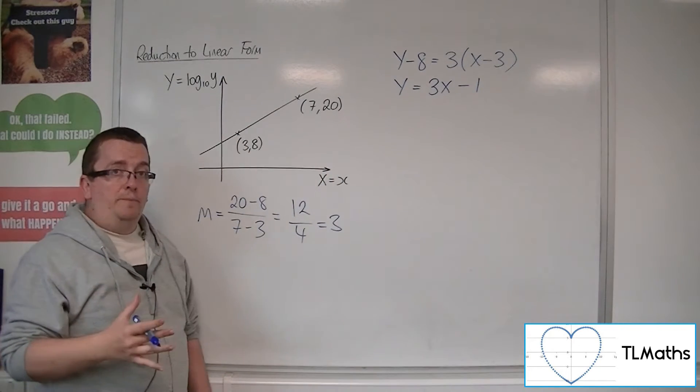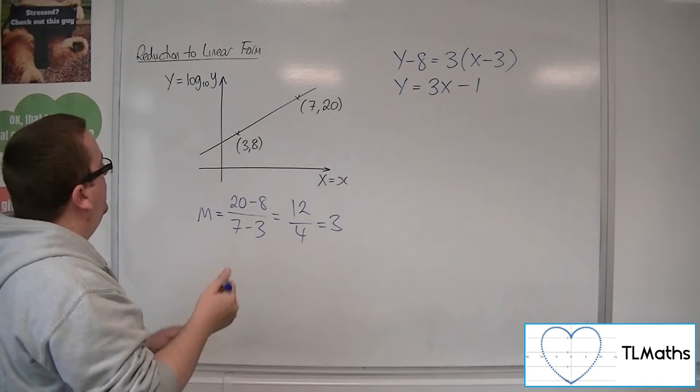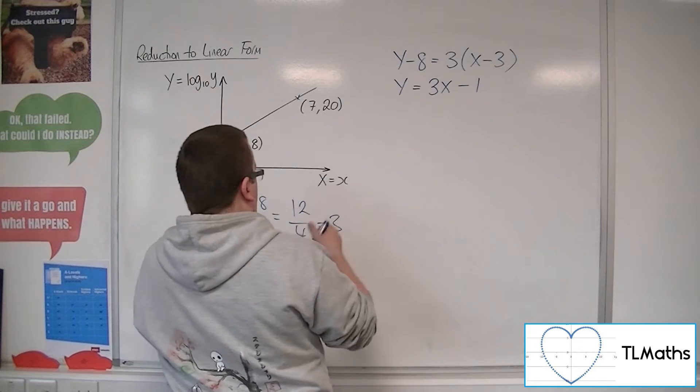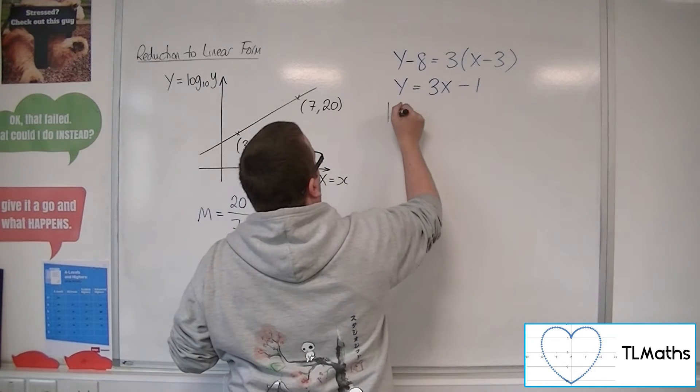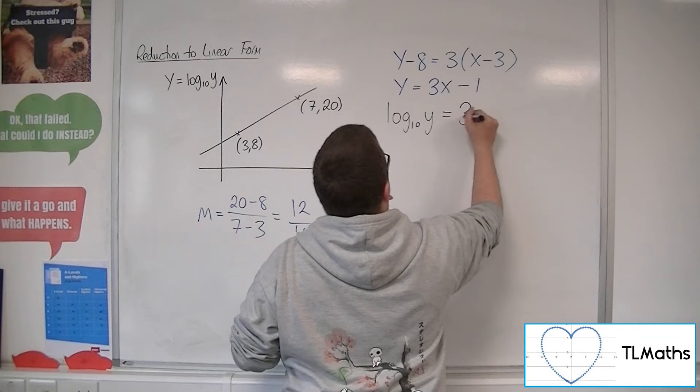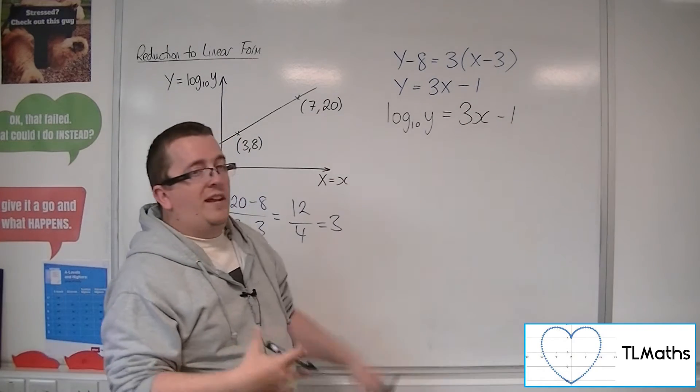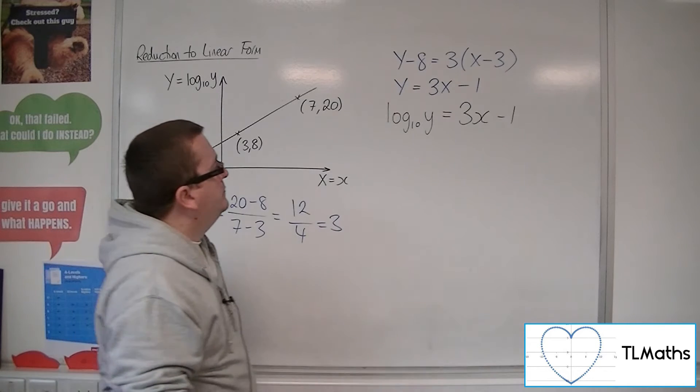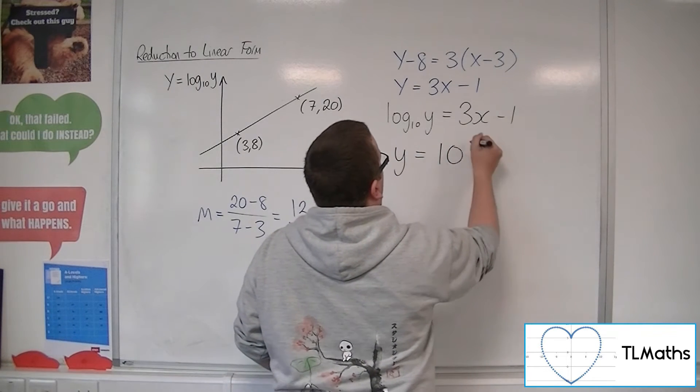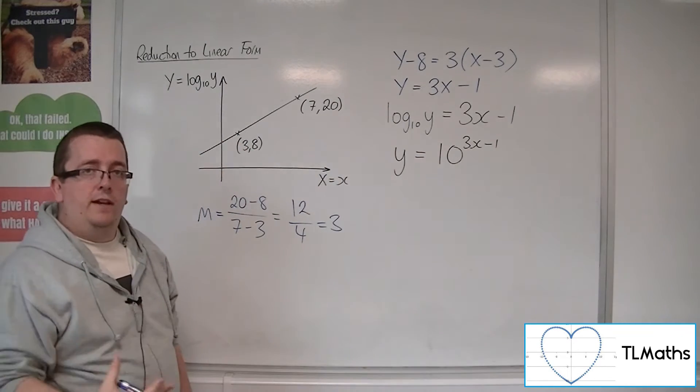Now, I can replace the y and the x back with log 10y and x. So log 10y equals 3x minus 1. Now, if I want to get to y equals, then this is y equals 10 to the 3x minus 1. So that's actually the equation of the curve.